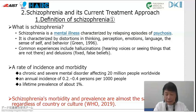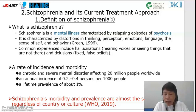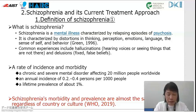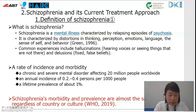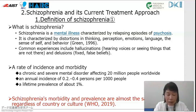Common experiences include hallucinations and delusions. Schizophrenia is a chronic mental disorder affecting 20 million people worldwide, with an annual incidence of 0.2 to 0.4 persons per 1,000 people and a lifetime prevalence of about 1%. According to diagnostic criteria, morbidity and prevalence are almost the same regardless of country or culture.